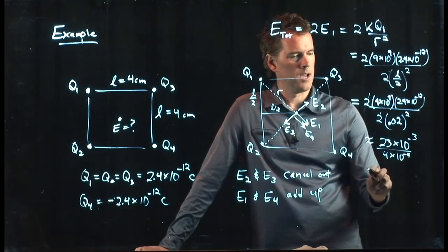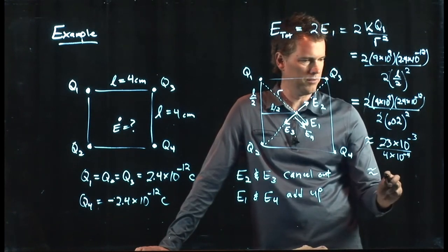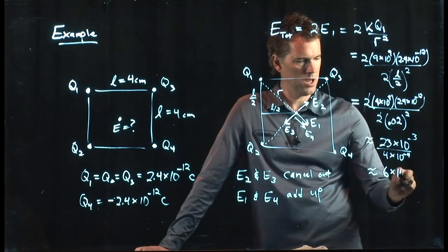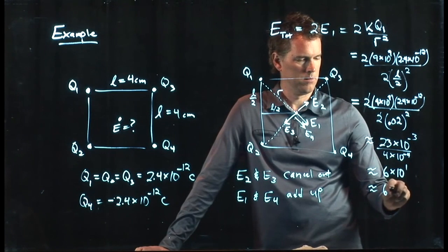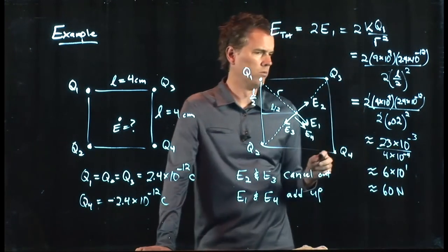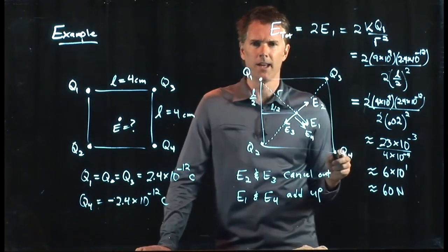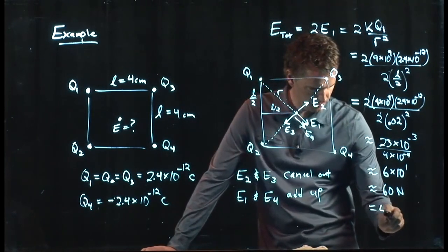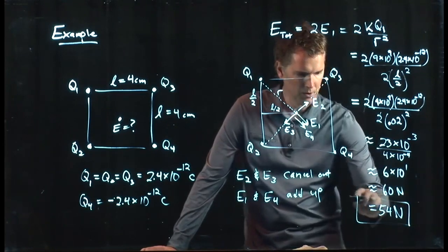And that I'm going to say is 23 over 4 is pretty close to 6 times 10 to the 1, so we're going to say it is 60 newtons. Is that close to what people got or not even close? I got 54. You got 54? All right, so we're pretty close. 54 newtons.